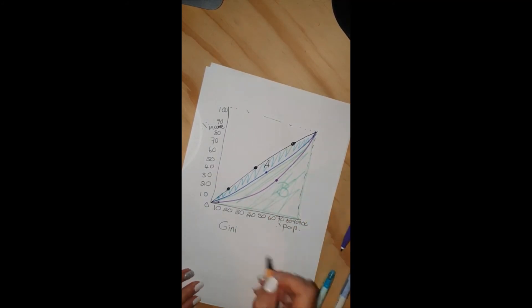The Gini coefficient is calculated by taking area A divided by the sum of area A plus B.